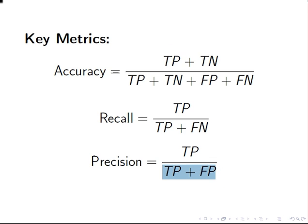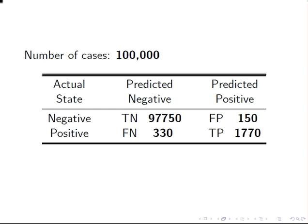Let's use this dataset. We have 100,000 cases: 97,750 true negatives, 1,770 true positives, 150 false positives, and 330 false negatives.